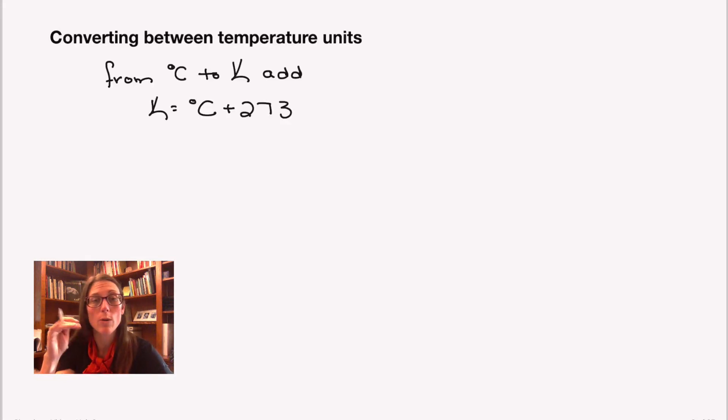On the contrary, if what you already know is Kelvin and you'd like to find Celsius, you're going to subtract 273. Just as a way to check yourself, the Celsius temperature will always be smaller than the Kelvin temperature. And again, you can never have a negative Kelvin temperature.